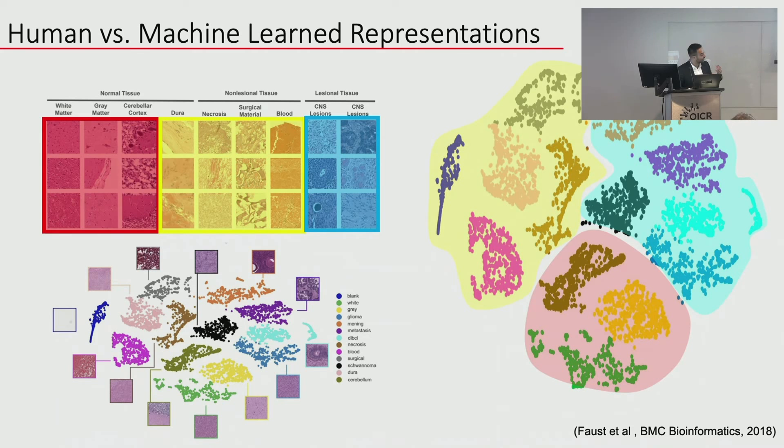There are correlations between how humans interpret tissue and the biology we know about these tumors, and how different classes are organized in the neural network — suggesting the network is organizing data in a way that's intelligible to a trained pathologist.